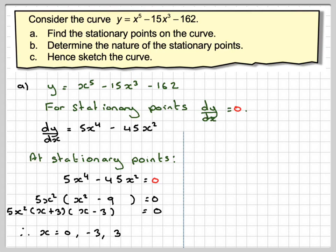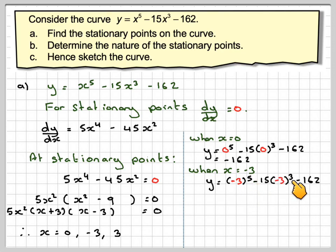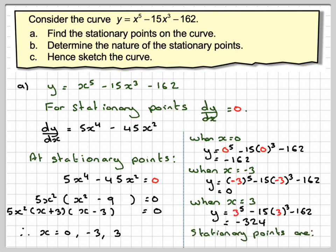We have to find the y-coordinates, so make sure we substitute back into y. When x is 0, y is 0 to the power of 5 minus 15 times 0 minus 162, which gives minus 162. When x equals minus 3, y is minus 3 to the power of 5 minus 15 times minus 3 cubed minus 162. Be careful in your calculator to put these into brackets before raising to the power of 5. That gives 0. When x equals 3, y is 3 to the power of 5 minus 15 times 3 cubed minus 162, which gives minus 324. So the stationary points are (0, -162), (-3, 0), and (3, -324).